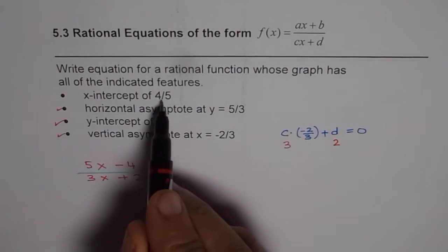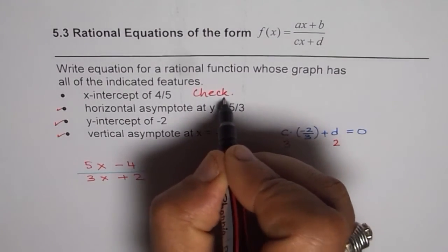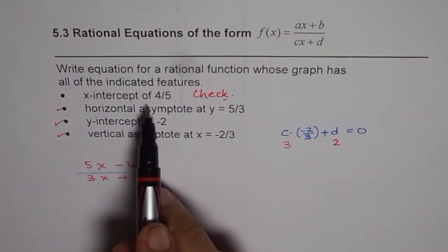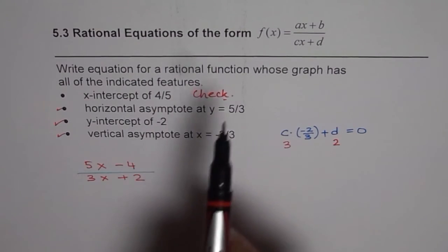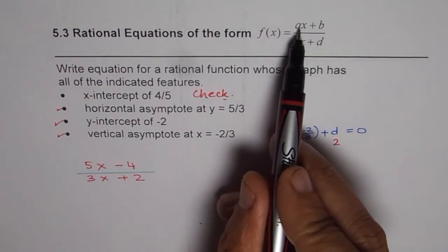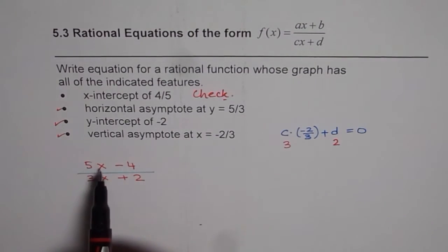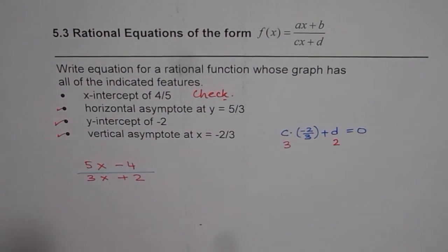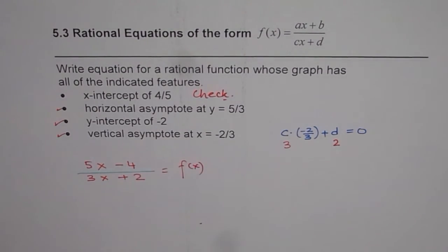The x-intercept serves as a checkpoint, so let us check whether it works or not. The x-intercept is 4/5, which means f(x) = 0, so the numerator should be 0. For x = 4/5, if I substitute 4/5 into the numerator, I do get 0. So that means this function is representative of the given conditions.